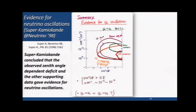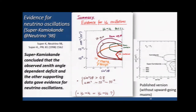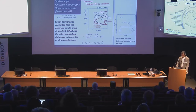This was the conference version. Soon after this conference, we published our data — this is the published version. For the publication, we only used the contained events. That was the Super-Kamiokande presentation.